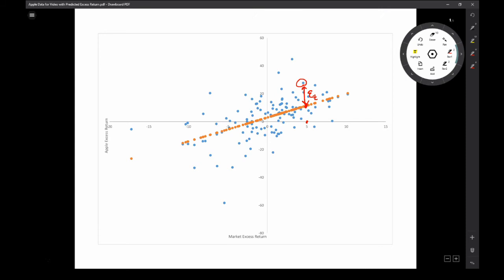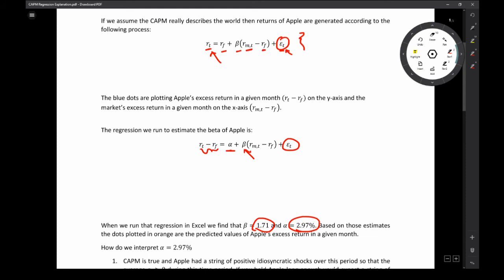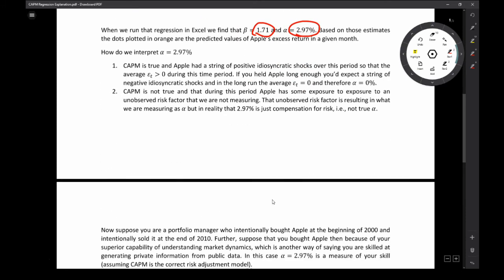So we estimated the beta and that was about 1.7. And we also estimated the alpha. Now the alpha is our intercept mechanically. That is this distance right there, the difference between zero and our intercept. Now, how do we interpret that alpha? And this is where it gets kind of fun.